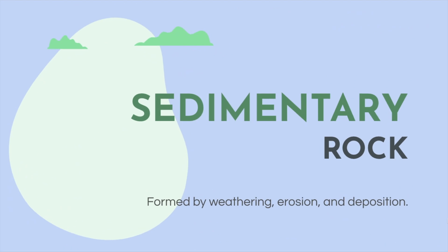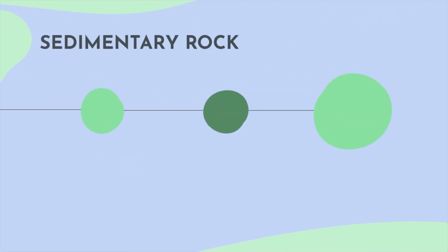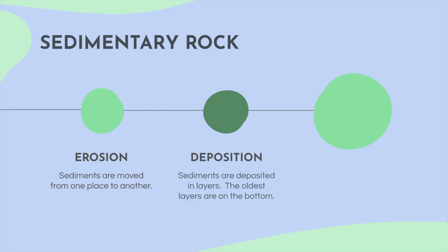The second type of rocks we're talking about is sedimentary rock. They are formed by weathering, erosion, and deposition. Let me show you how this works. First off, erosion — sediments are moved from one place to another. Sediments are then deposited in layers. The oldest layers are on the bottom, of course.